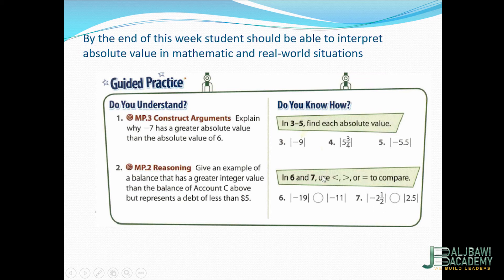Now use less than, greater than, or equal to to compare. The absolute value of negative 19 is 19, and the absolute value of negative 11 is 11. We are comparing their absolute values, so the absolute value of negative 19 is greater than the absolute value of negative 11. The absolute value of negative 2 and a half equals 2 and a half, and the absolute value of 2 and a half is also 2 and a half, so they are equal.